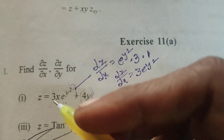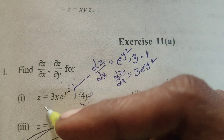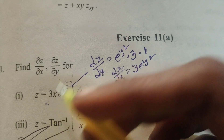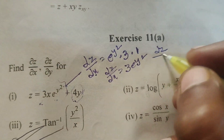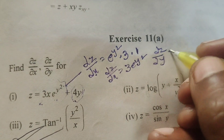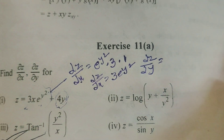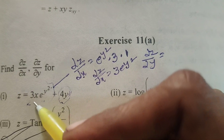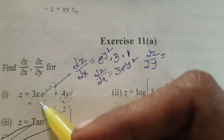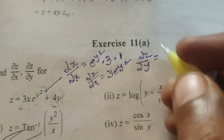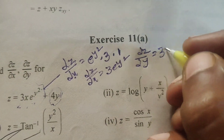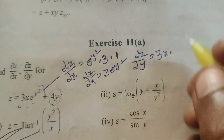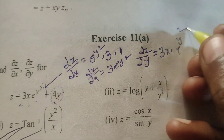Now partially differentiating with respect to y. Therefore, dou z by dou y equals to: here in this term, 3x is the constant, because now we are differentiating with respect to y. So 3x is the constant. e power y square — differentiation of e power y square means e power y square as it is, because differentiation of e power x means e power x.